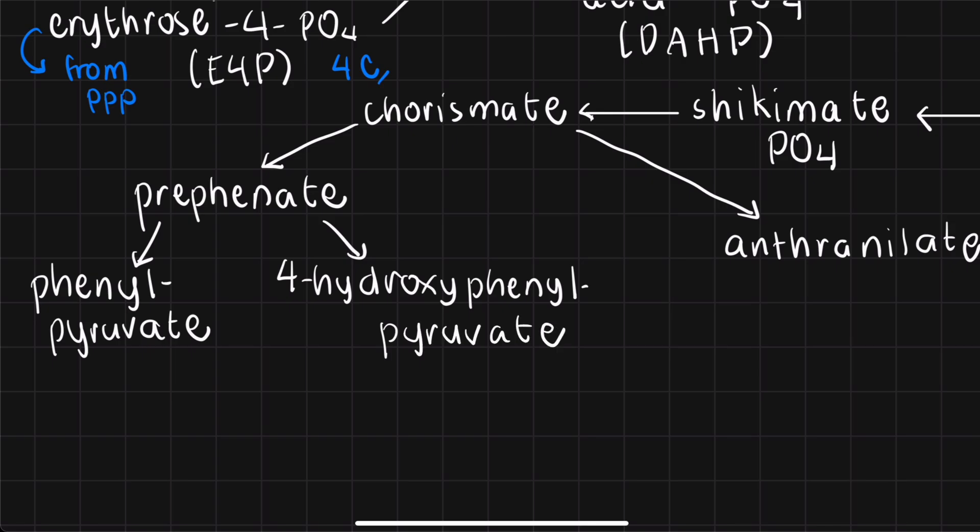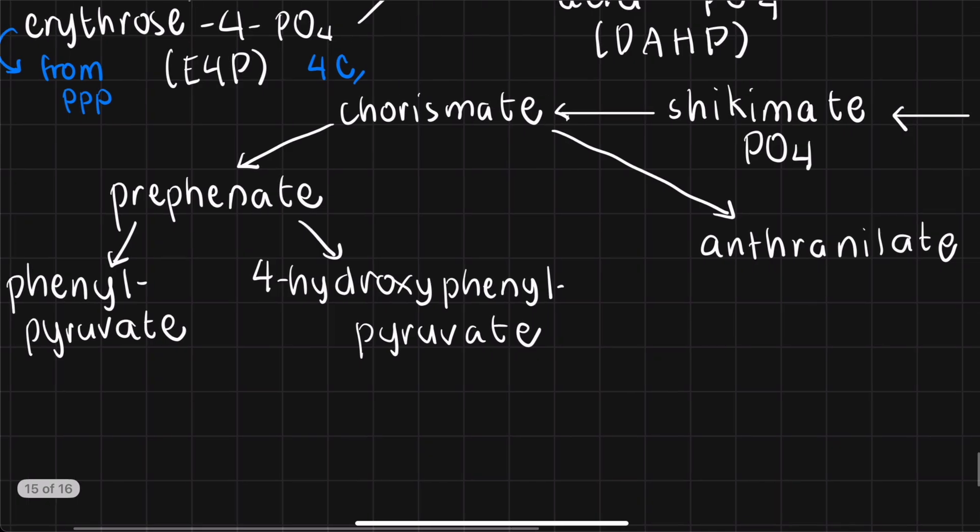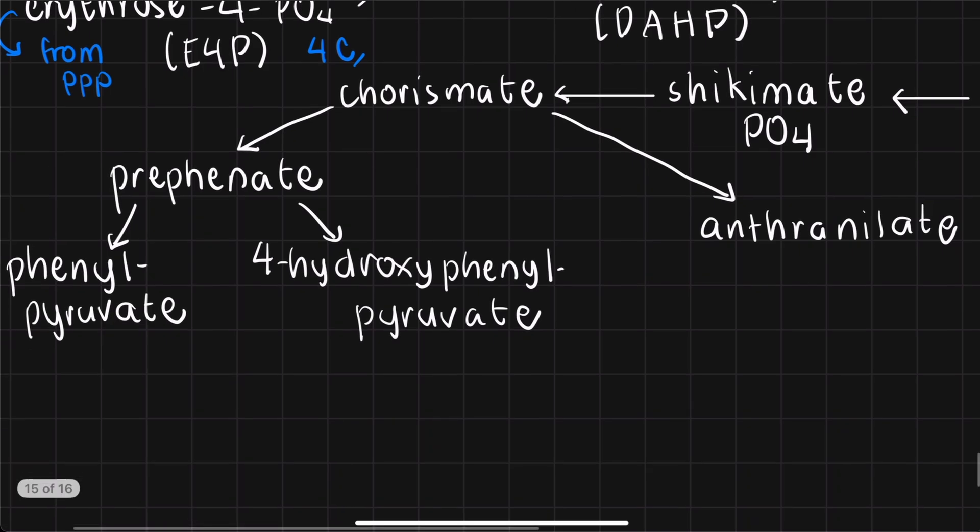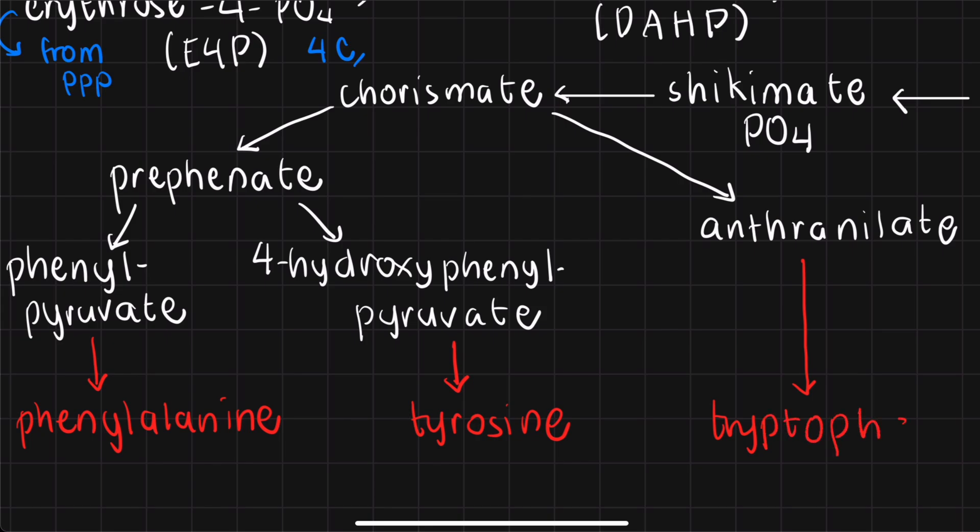At this point, you are now seeing three loose ends, right? Or three open ends. And I'm saying that because these will give us three recognizable products under the assumption you still remember some of your biochemistry. From phenylpyruvate, we will be producing phenylalanine, from 4-hydroxyphenylpyruvate, we will be producing tyrosine, and from anthranilate or anthranilic acid, we will be producing tryptophan.